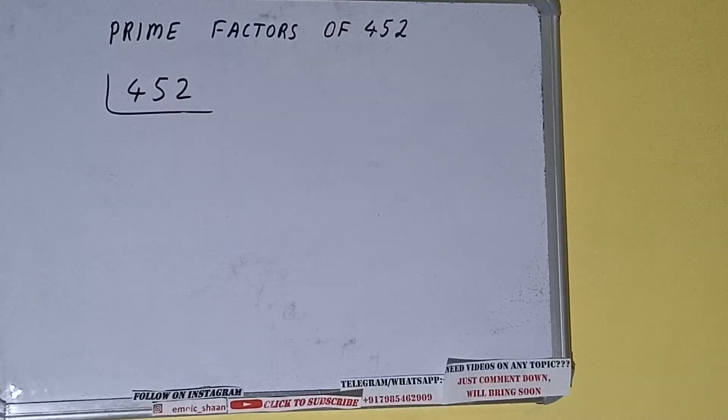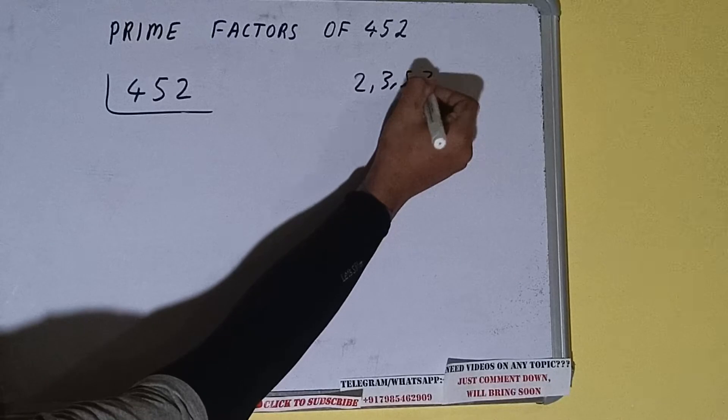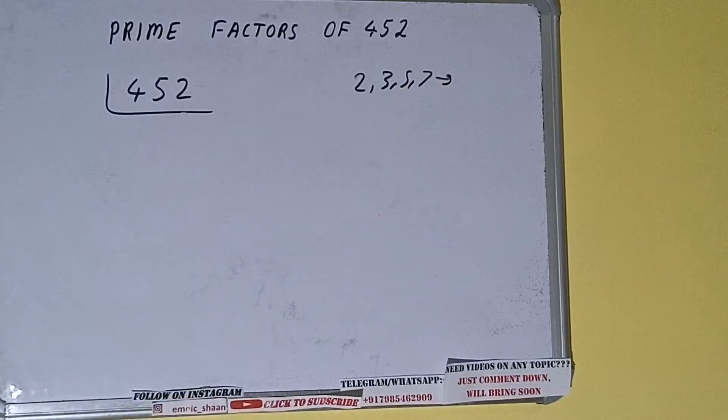The next thing we need to know about is what are prime numbers. So prime numbers are numbers that are divisible by one and the number itself, like two, three, five, seven, and so on.